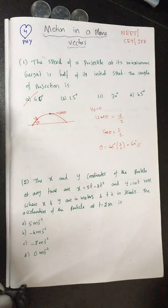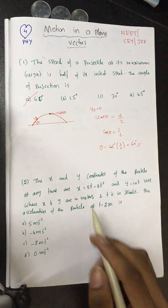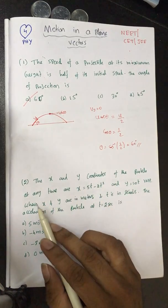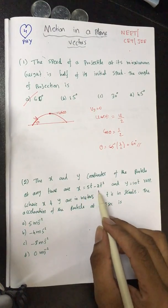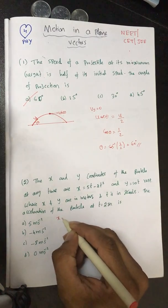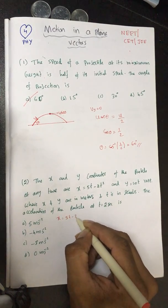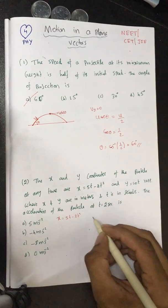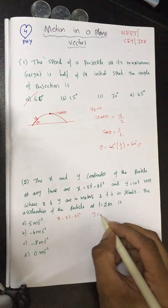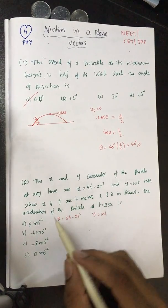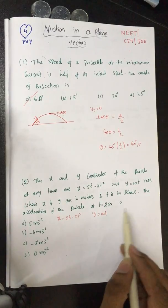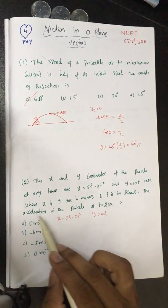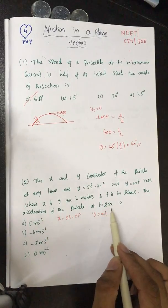The next question is again on motion in a plane. The x and y coordinates of the particle at any time are given by x = 5t − 2t² and y = 10t respectively, where x and y are measured in meters and time is in seconds. The acceleration of the particle at t = 2 seconds is required.